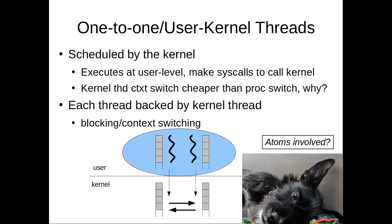Threads have the benefit that you share all data, so it's trivial to share things between threads — but it also means you need to coordinate access to that data, which we'll talk about next time. One-to-one threads are faster than switching between different processes because we don't need to switch virtual address spaces. However, you do need to make system calls to switch between them, so the atoms involved include system calls and context switches, but not switching between virtual address spaces of separate processes since the same virtual address space stays active.